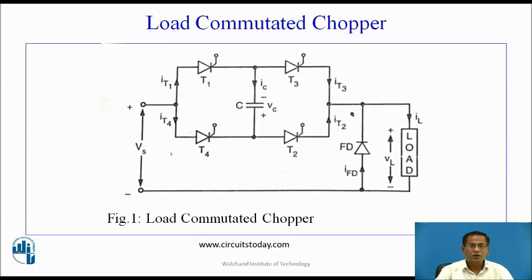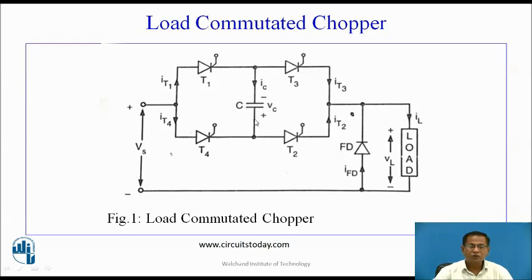Prior to firing of thyristor T1 and T2 at t=0, the other pair T3, T4 was in conduction. Hence C has been charged to the supply voltage Vs. In mode 0, assume that the gate pulses are applied to T3 and T4. Therefore, the current flows through Vs, T4, C, T3, load and capacitor C starts charging. As long as C charges, T3, T4 remains conducting and capacitor C gets fully charged up to Vs. At the end of this mode, the lower plate becomes positive and upper plate becomes negative.